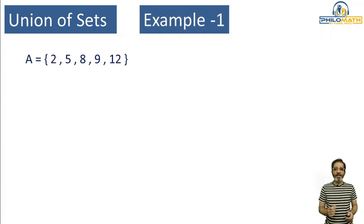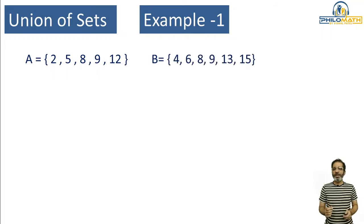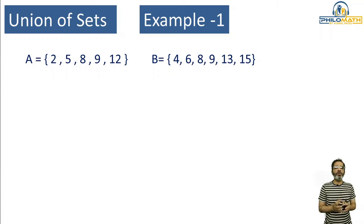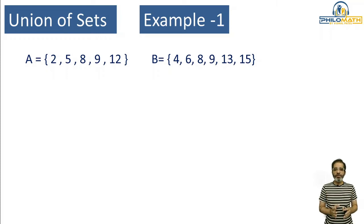I have taken two sets, Set A and Set B. The elements of Set A are 2, 5, 8, 9, and 12, and the elements of Set B are 4, 6, 8, 9, 13, and 15. Now, what do we mean by union of two sets? Union means we have to write down a set which includes all the elements of A as well as all the elements of B.